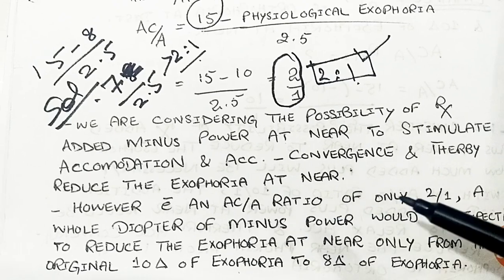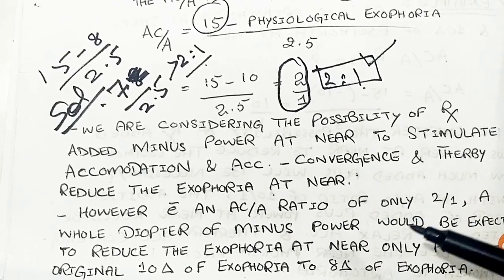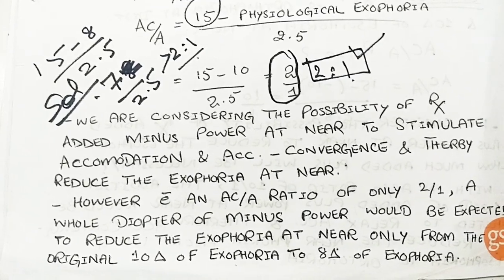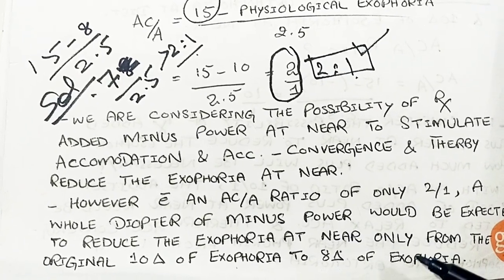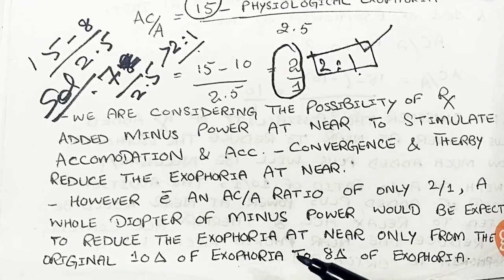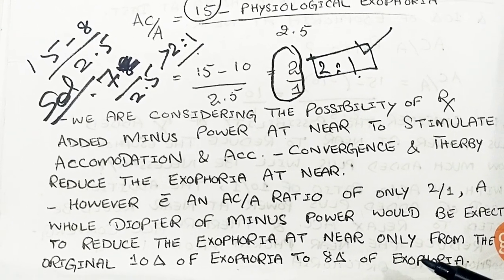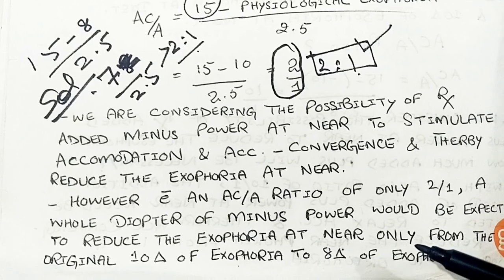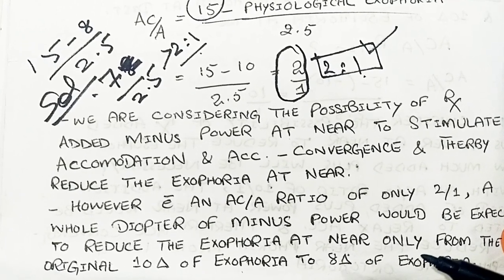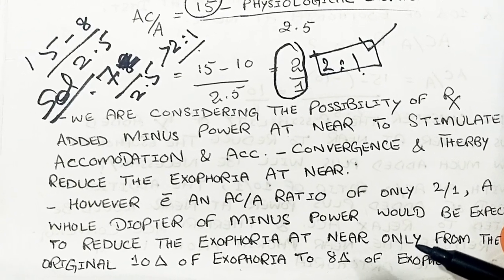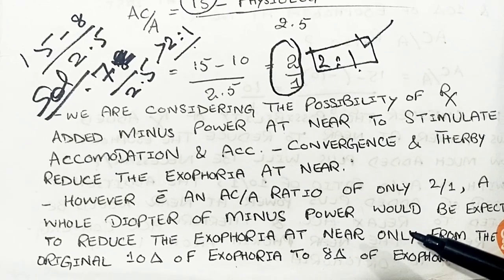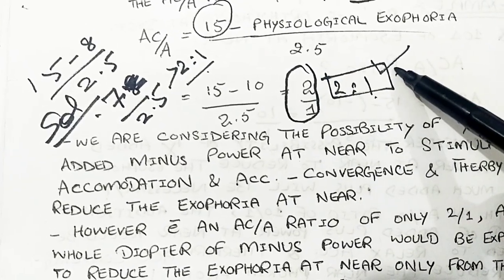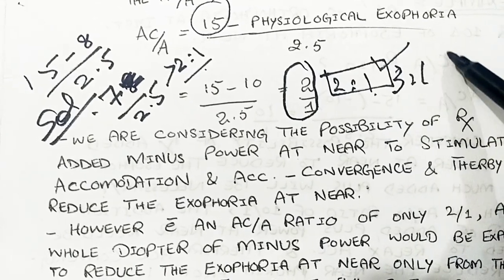However, with an AC/A ratio of only 2 to 1, a whole diopter of minus power would be expected to reduce the exophoria at near only from the original 10 prism diopters to 8 prism diopters of exophoria. So a full minus 1 diopter lens is needed to shift the ratio from 2 to 1 up toward 3 to 1.